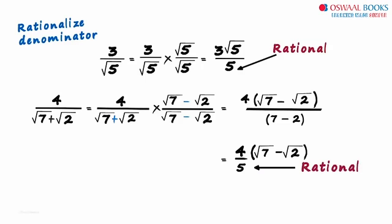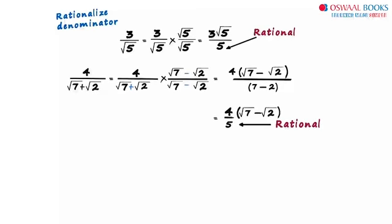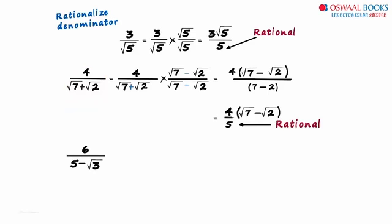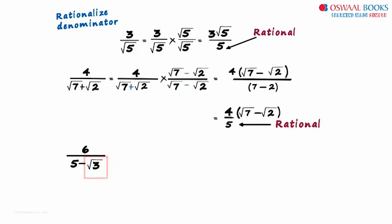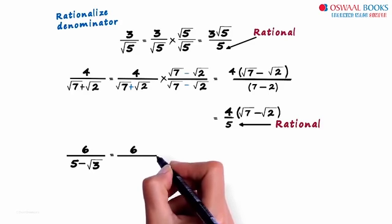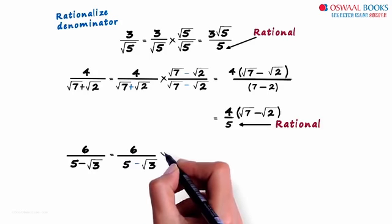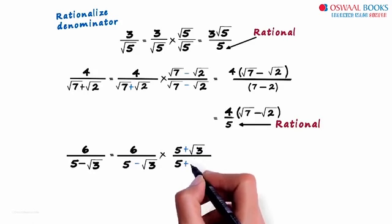Now let's look at the last example: 6 divided by 5 minus root 3. This example is slightly different from the previous one. In the previous example, both numbers in the denominator had a radical, while in this example only one number has a radical. But this denominator too is irrational. Do we just change the sign in between, just like we did in the previous example? Yes — we can write this as 6 by 5 minus root 3, multiplied by 5 plus root 3 divided by 5 plus root 3.